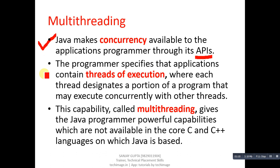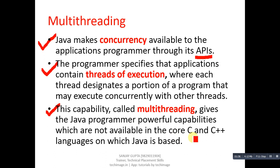The second point says the programmer specifies that applications contain a thread or threads of execution, where each thread designates a portion of a program that may execute concurrently with other threads. This capability is called multi-threading, and it gives the Java programmer powerful capabilities not available in core C and C++ languages on which Java is based.